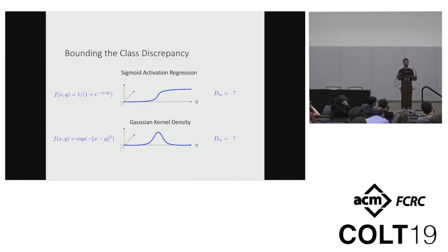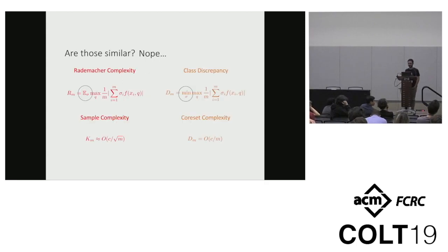But if you take this to higher dimensions, then suddenly things break. So if you look at sigmoid activation regression, we didn't know how to bound its class discrepancy and neither could we do it for Gaussian kernel until we started working on this problem. So a high dimensional version of a bump is some kernel function. Here is the Gaussian kernel. And you'd think to yourself, I'd want to maybe think about, so this expression, the class discrepancy actually is incredibly similar to the Radermacher complexity. Instead, the only difference is that instead of looking at the expectation of these random signs, we look at the minimal possible assignments of random signs.